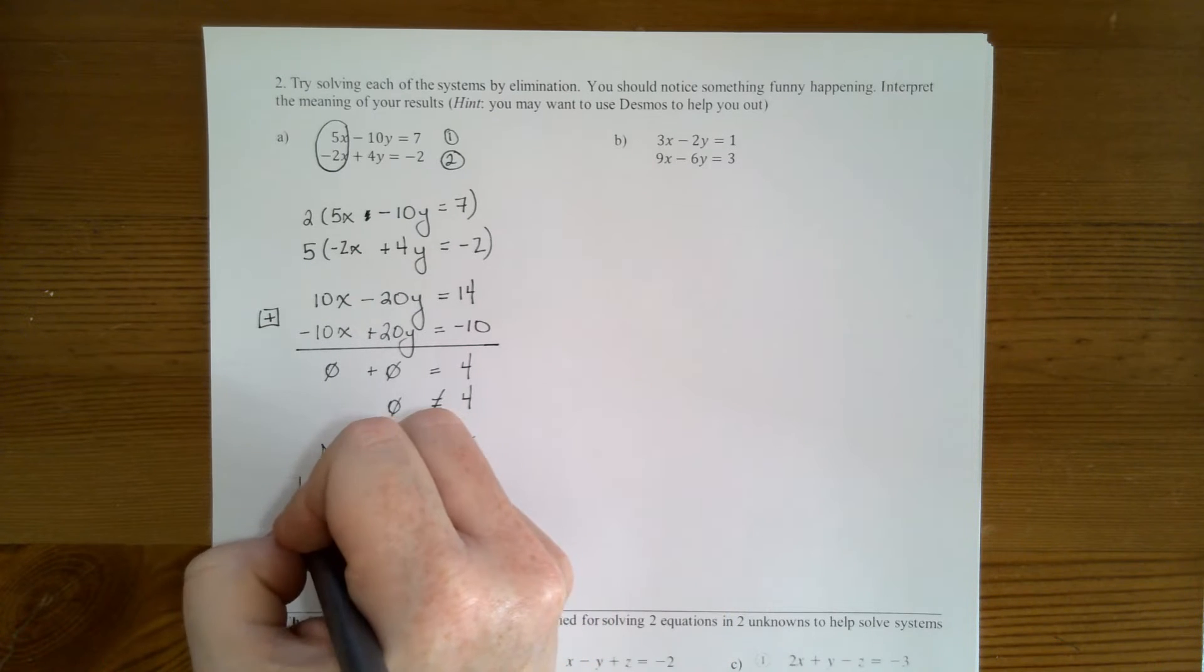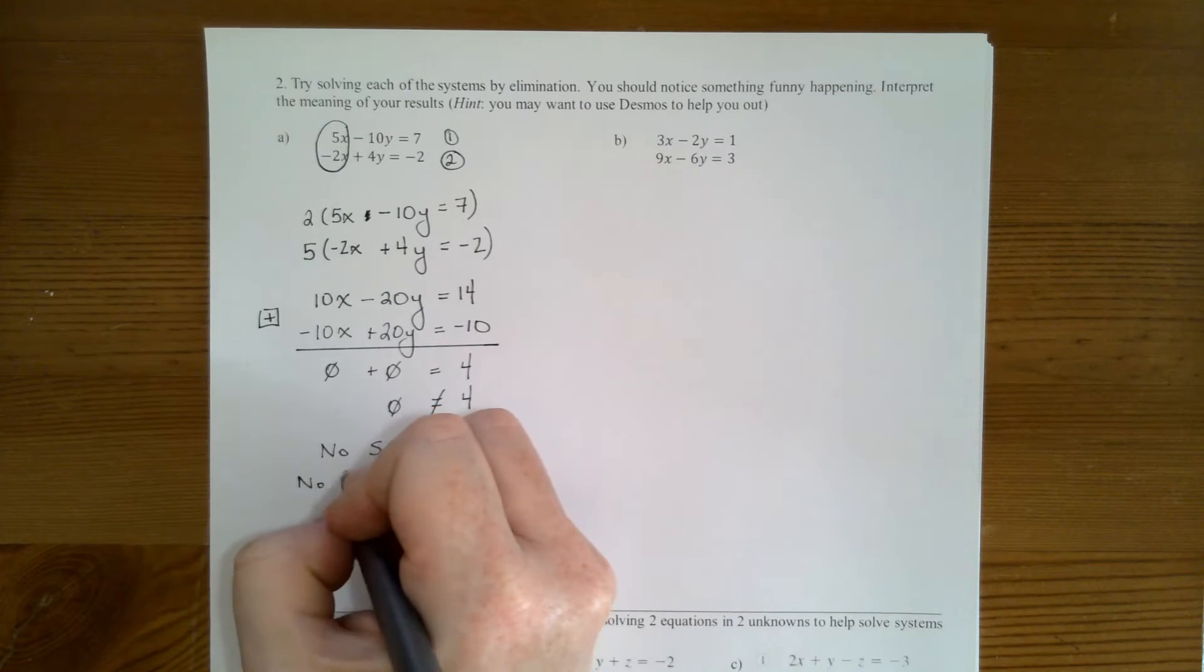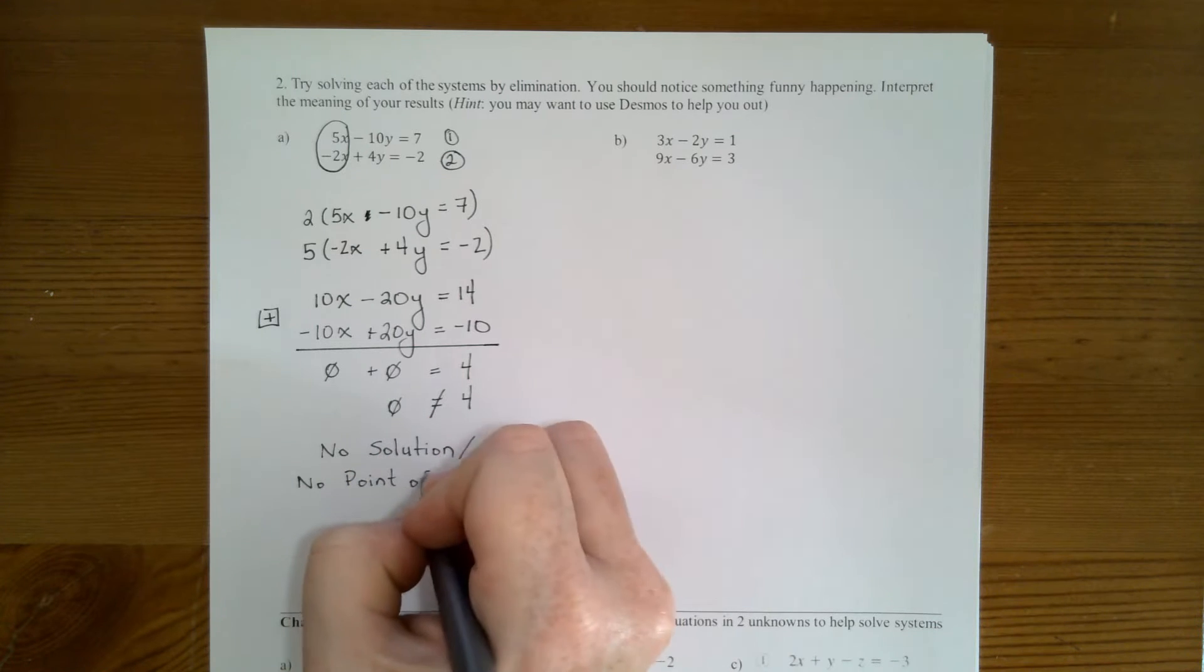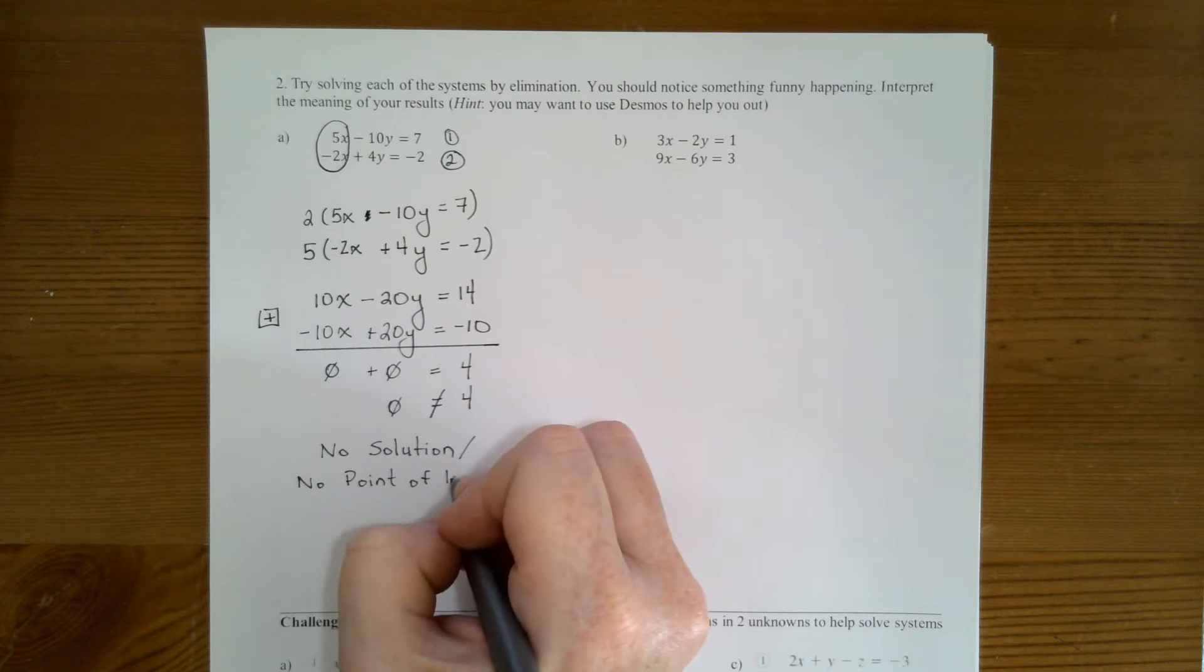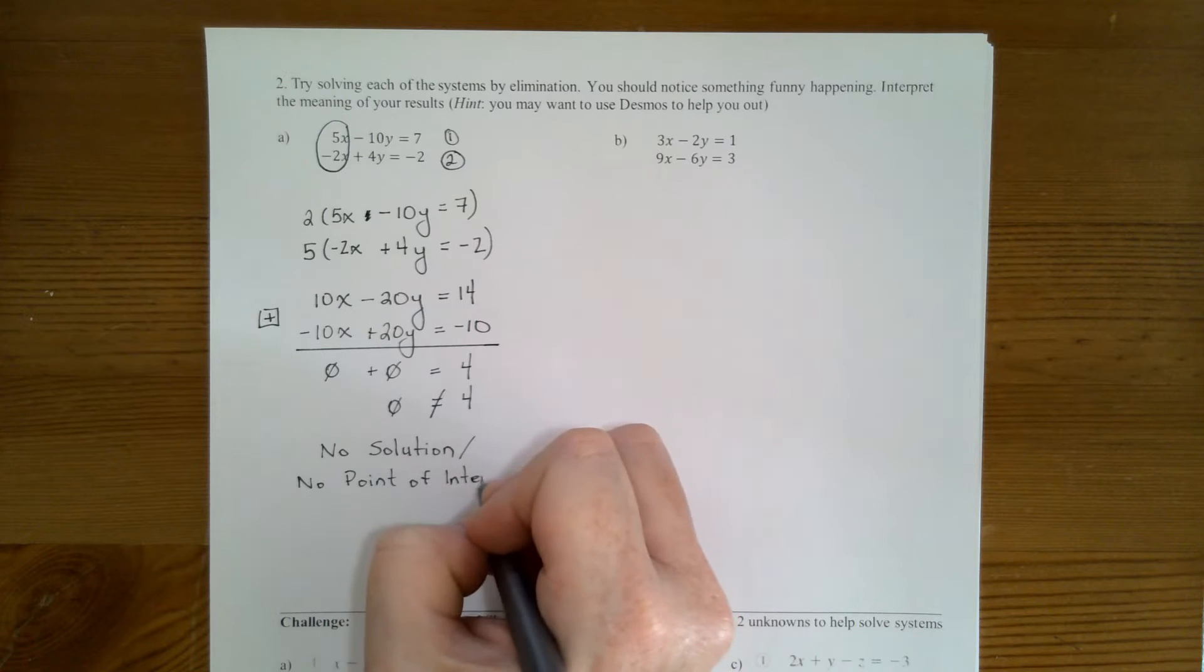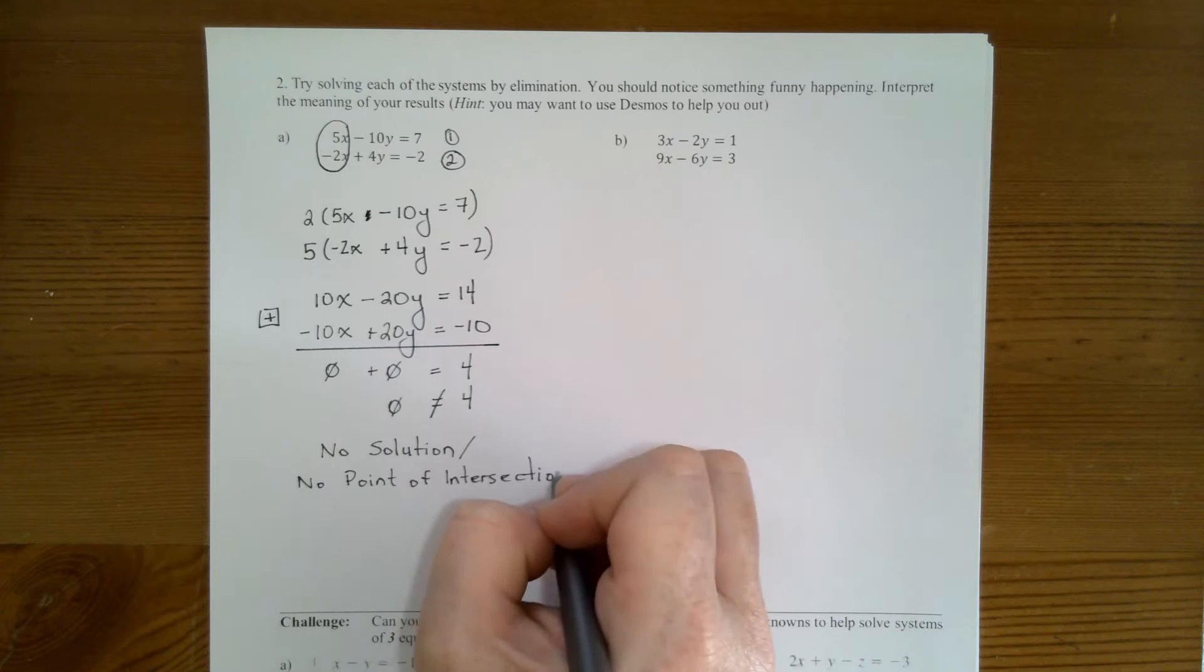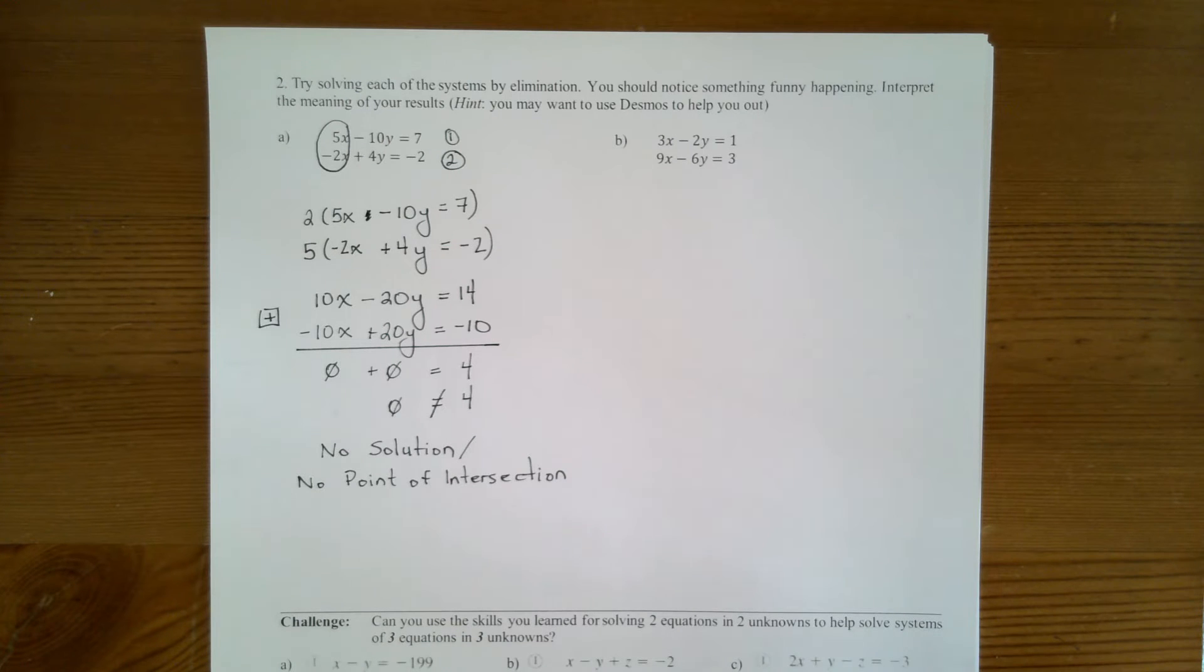So the next part of the question says, why is this funny thing happening? How can there possibly be no solution and no point of intersection when you have two lines? It asked you to go out to Desmos and just graph it. I already did that and I'm just going to show you the graph.